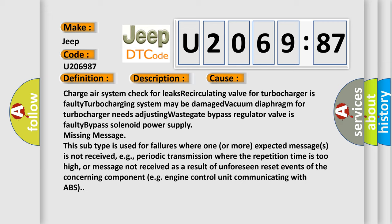This subtype is used for failures where one or more expected messages is not received, e.g., periodic transmission where the repetition time is too high, or message not received as a result of unforeseen reset events of the concerning component, e.g. engine control unit communicating with ABS.